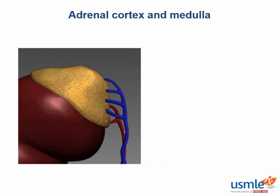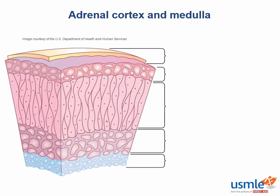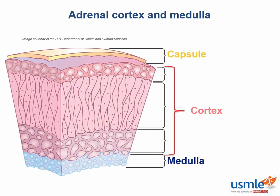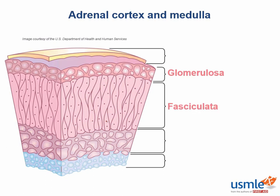Now let's take a cross-section of the adrenal gland and pick it apart from the outside in. The adrenals are surrounded by a fibrous capsule, but the most important structural and functional distinction is between the steroid-producing cortex and the catecholamine-producing adrenal medulla. The cortex is divided into three zones, each containing a different arsenal of enzymes to generate a different set of steroids. From outside to in, the zones are named glomerulosa, fasciculata, and reticularis — remember GFR, like the kidneys they're sitting right on top of.